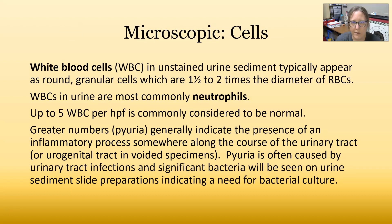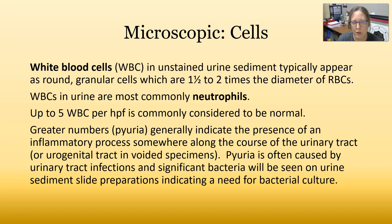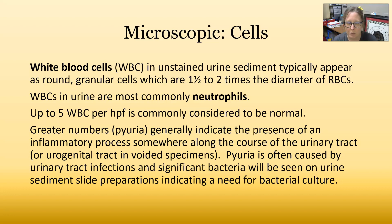White cells in an unstained urine sediment typically appear as round granular cells which are one and a half to two times the diameter of red cells. White blood cells in the urine are most commonly neutrophils, meaning they are there to fight off an infection. Up to five white blood cells per high power field is commonly considered to be normal. The high power field is the 400x magnification field, using the 40x objective lens with the 10x ocular.